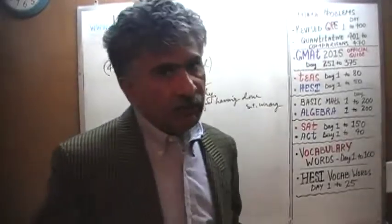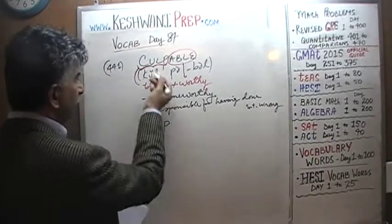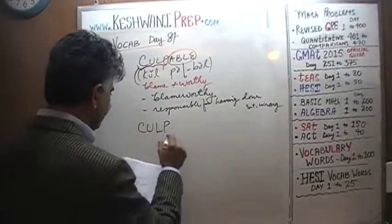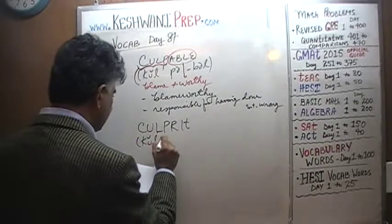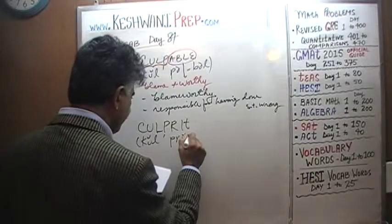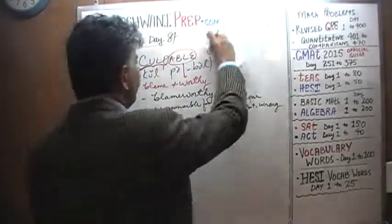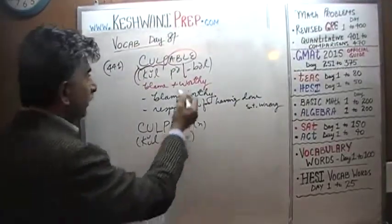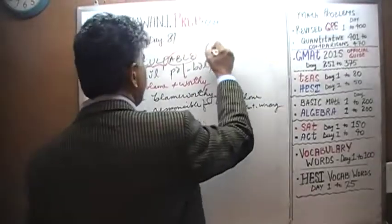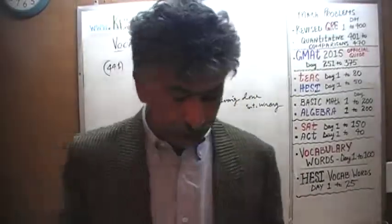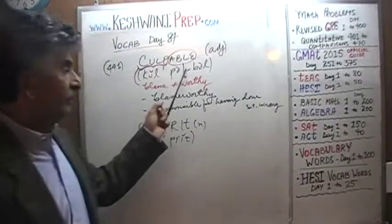Now, the other word which is very similar to culpable and means the same thing — you see 'culp' again. Culp means blame. The prefix here, culp, means blame. The word is culprit. Again, culp — culprit. Culpable is not a noun. If you describe someone as culpable, you are describing somebody, and a description would be an adjective. A culprit is a person. That's the difference between culpable and culprit — culpable is an adjective.